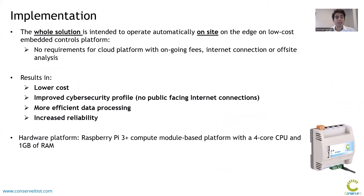The approach was then implemented with the intent to operate automatically on-site, on the edge, on a low-cost embedded controls platform in real time. The advantage is that there is no requirement for a cloud platform, which would have ongoing maintenance fees, require internet connection, and off-site analysis. This results in lower cost, improved cybersecurity profile, more efficient data processing, and increased reliability. The hardware platform used is a Raspberry Pi 3 Plus compute module-based platform with a four-core CPU and only one gigabyte of RAM — a relatively low-powered, low-cost option that can be deployed on site.